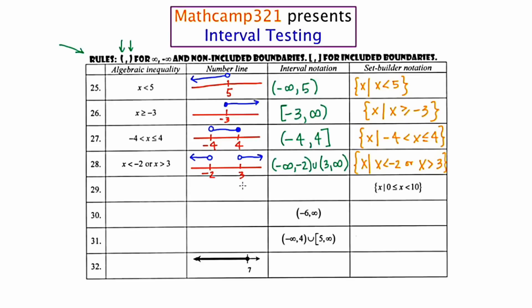Number 29: they're giving us the set builder notation. We talked about the fact that set builder notation is essentially just a rewrite of the algebraic inequality. So I'm going to write x is between 0 and 10. Having done that, it turns into one of the problems we've been working on. I'll put the number line down with critical values 0 and 10. Zero is going to be a closed circle, 10 is going to be an open circle, and I'm going to shade everything in between. The interval is going to be 0 to 10: include gets a bracket, exclude gets parentheses.